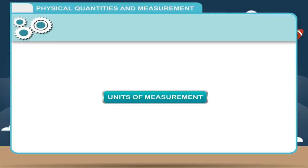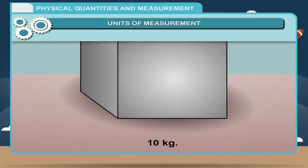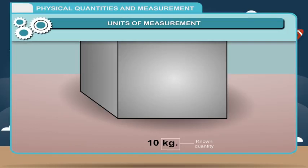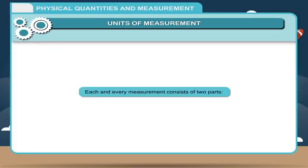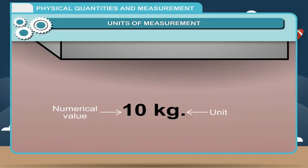Units of Measurement: Measurement requires the comparison of an unknown quantity with some known fixed quantity of the same kind. This known fixed quantity is called the unit. Each and every measurement consists of two parts: 1. A number called the numerical value, and 2. A symbol or alphabet that denotes the unit associated with it.